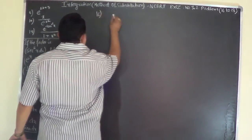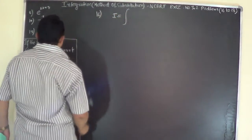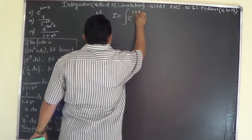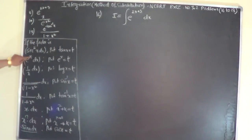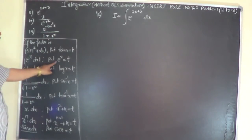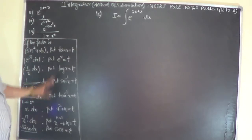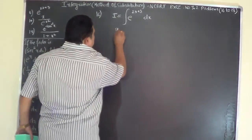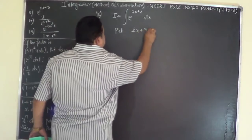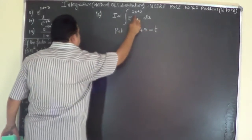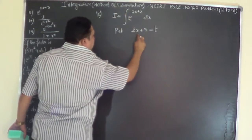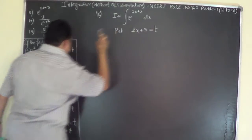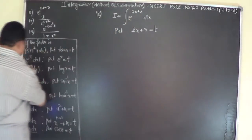Let me begin with the 16th problem. Write the problem in the standard manner as I equals integral of e to the power of 2x plus 3 dx. Now put 2x plus 3 equals t, making this function come to the form e to the power of x dx. If I put 2x plus 3 as t, then it becomes e to the power of t, so it matches this form.